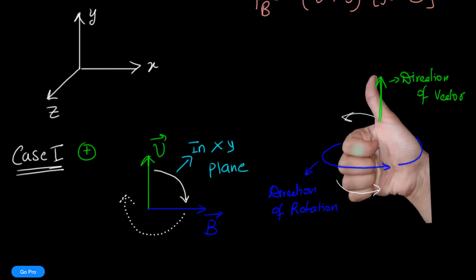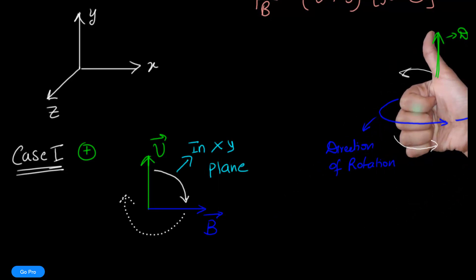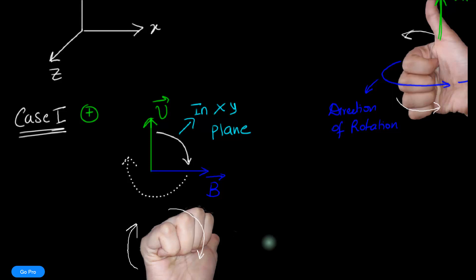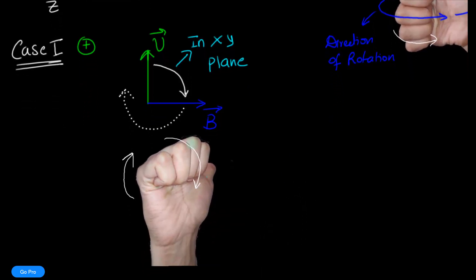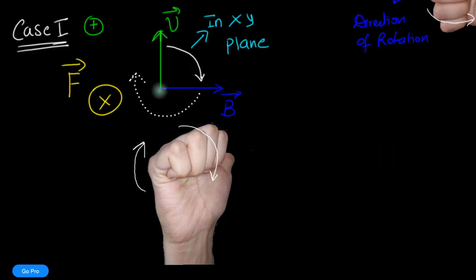In this example, the rotation is in the x-y plane. Notice that the thumb points inwards, and therefore the force in this example is into the screen — and that is for a positive charge. But if this charge was negative, the force would be directed out of the screen.